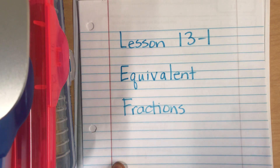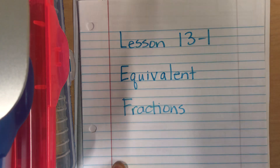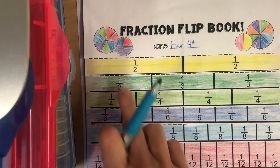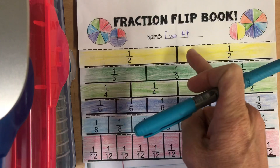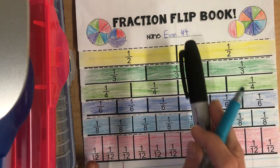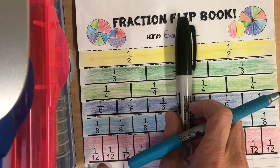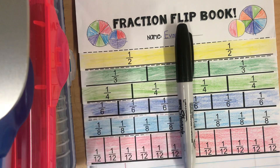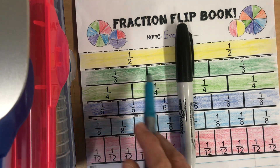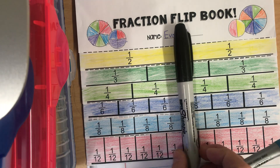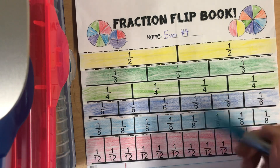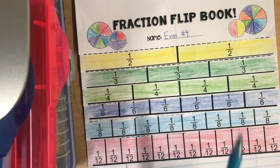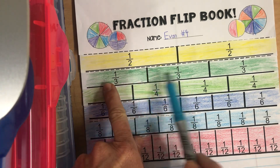Lesson 13-1: Equivalent Fractions. We're going to use our fraction flip book today. When we have 1 half, we can place our pencil right at the end line for 1 half and see how many 1 fourths, 1 eighths, or 1 twelfths are the same as 1 half. All of these that have a line ending at the same place as 1 half will have an equivalent fraction to 1 half.